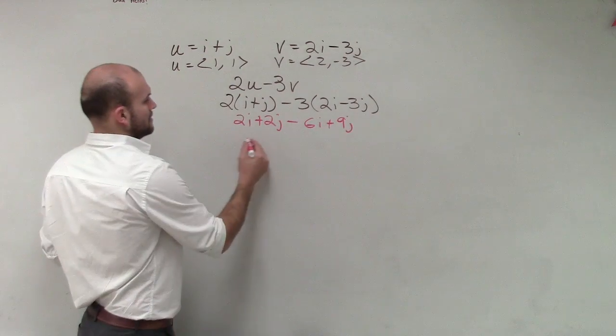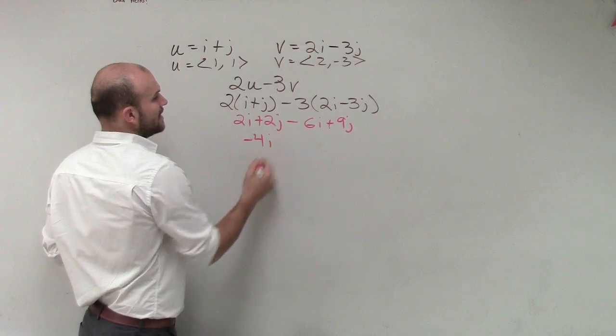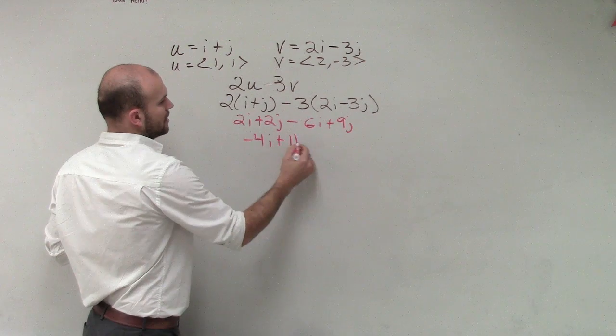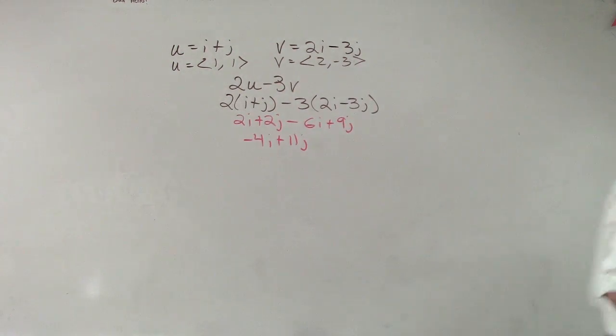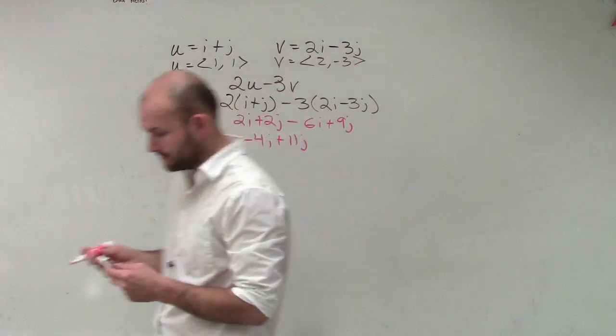Combine like terms. Negative 4i plus 11j. Everybody following me with that?